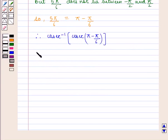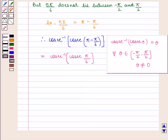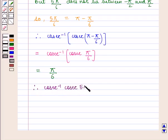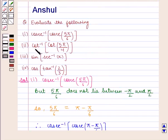Therefore, the given expression becomes cosec inverse of cosec(π − π/6), which equals cosec inverse of cosec(π/6). Therefore, the value of the expression cosec inverse of cosec(5π/6) is equal to π/6, which is the required answer.